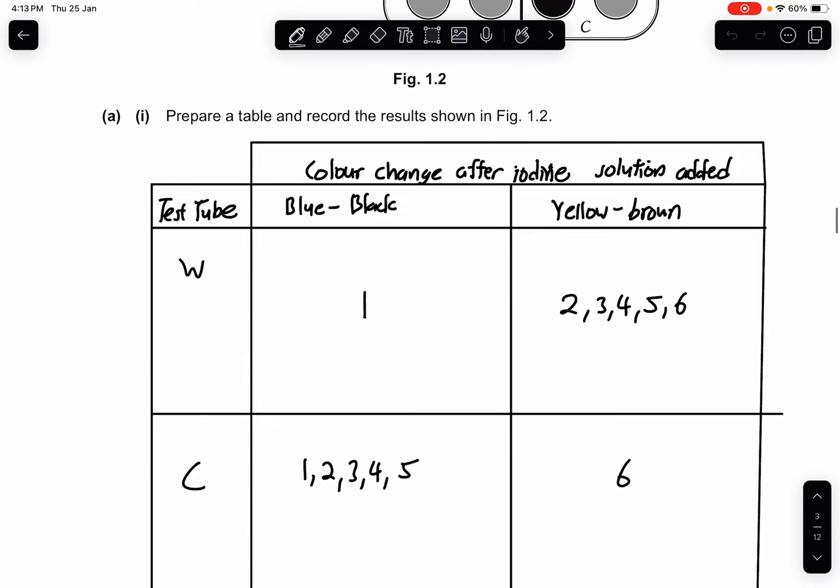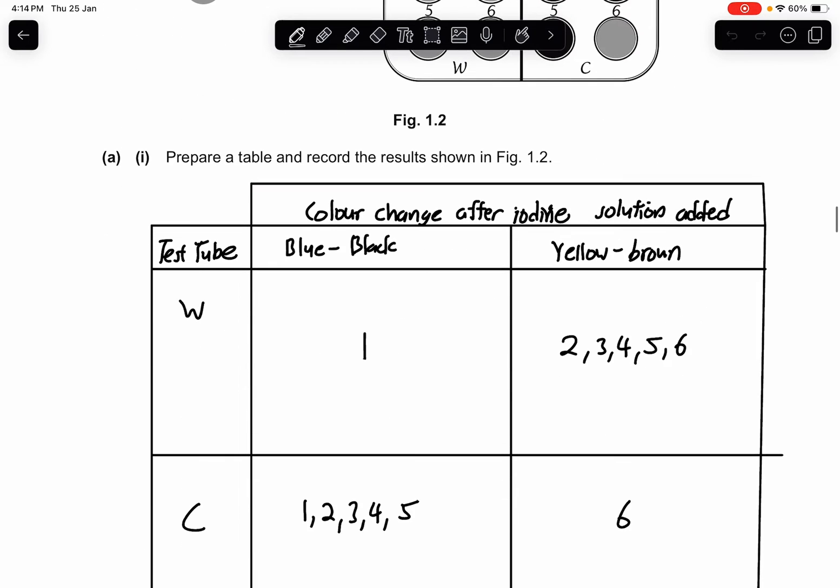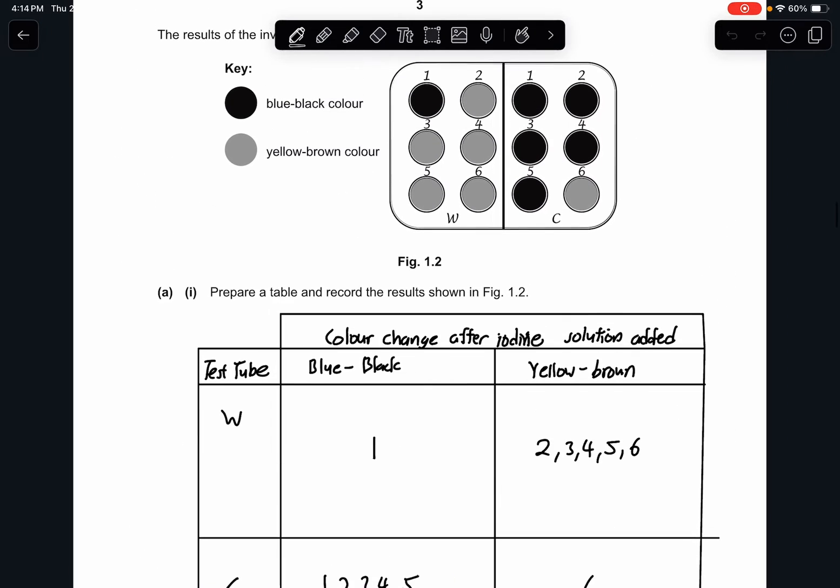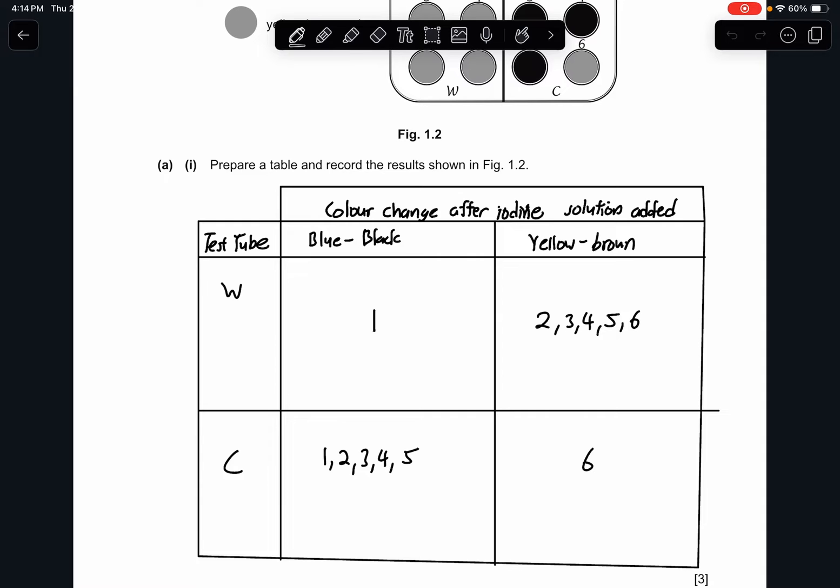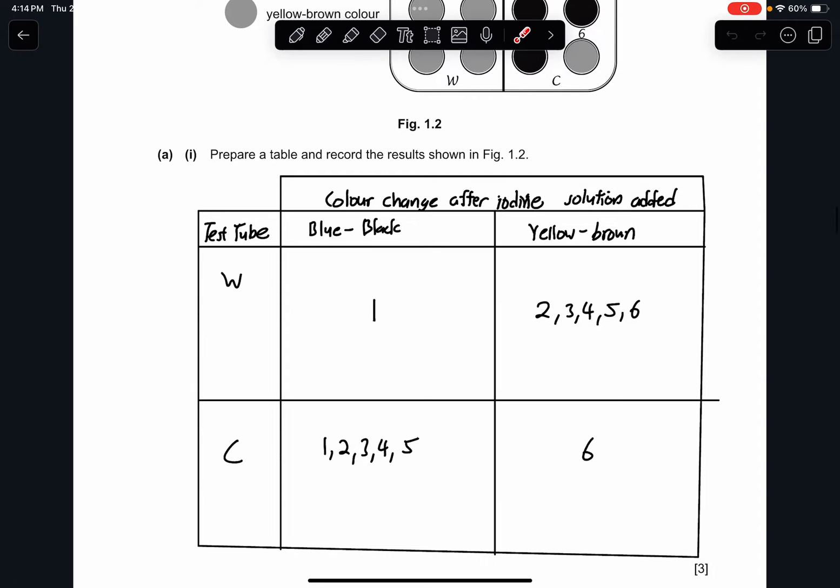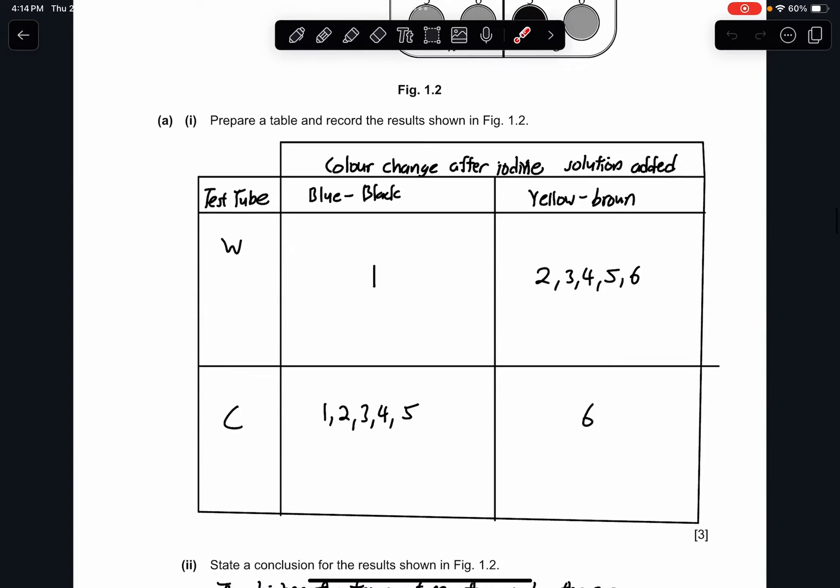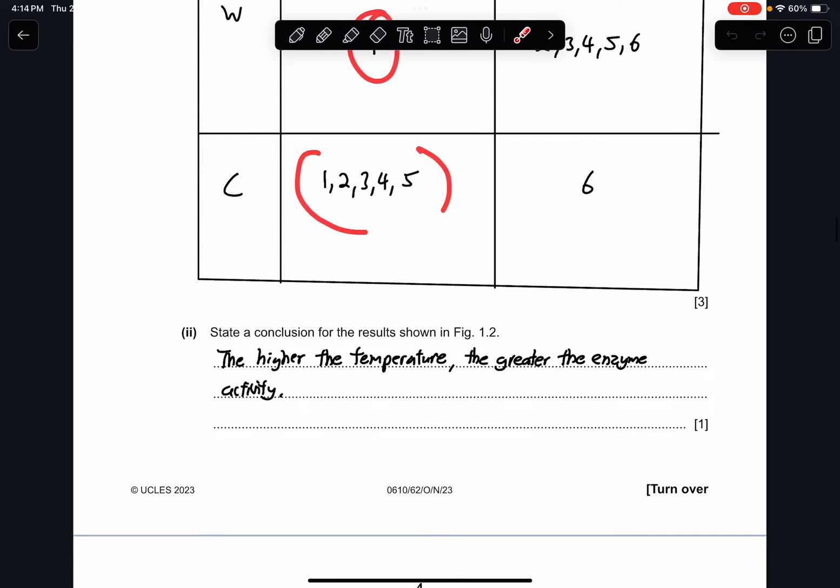For part A1, prepare a table and record the results shown in figure 1.2. For this table that I've drawn, it's more of just identifying it. I have put test tube for W and C, and then the color change after iodine solution added. I put number 1 which has this particular color, and then the rest of it I just fill in the blanks. This is how I get my 3 marks.